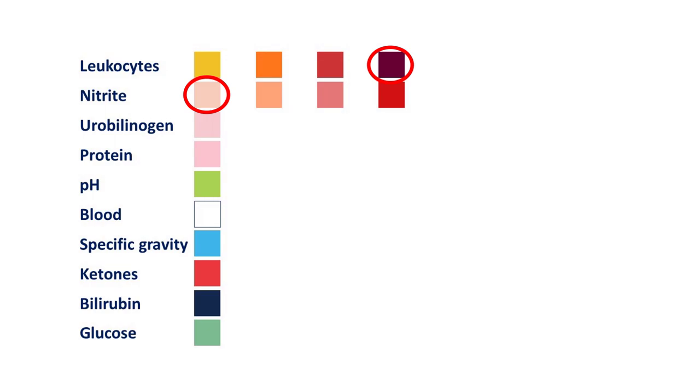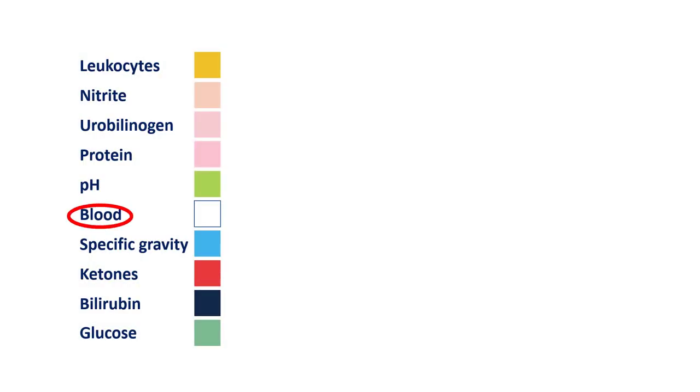In addition to leukocyte esterase and nitrites, you may even find signs of hemorrhage, meaning hemoglobin, because infection and inflammation damages the epithelium in the urinary bladder and this produces hemorrhage, which you can detect in a urine sample. So much about test strips.